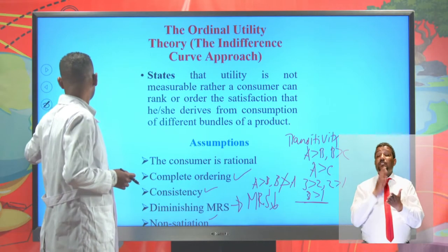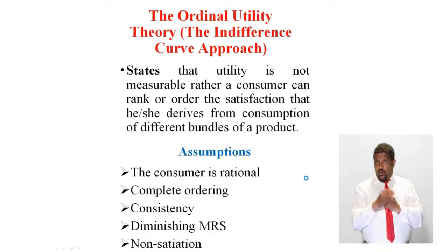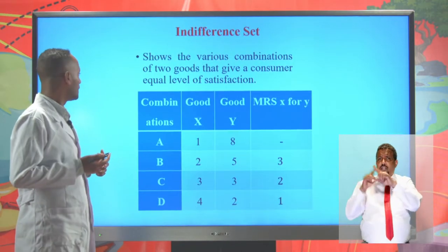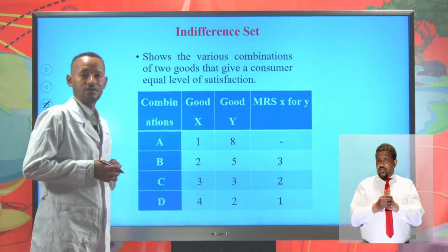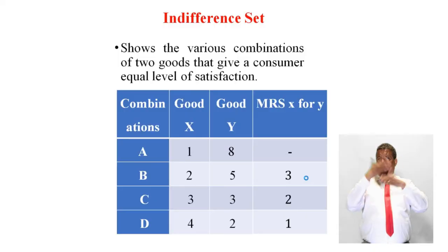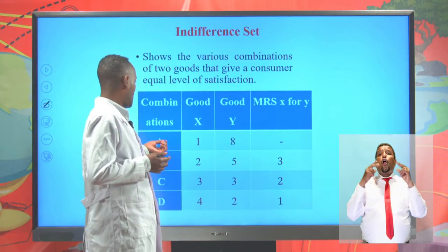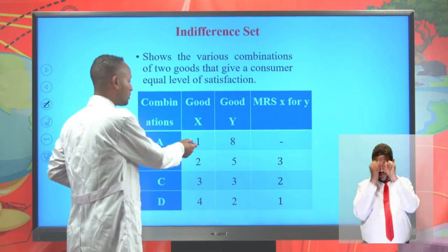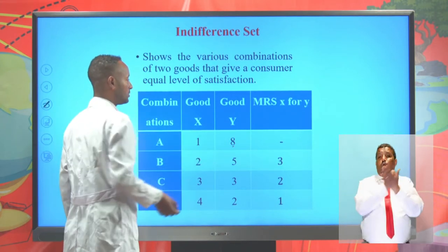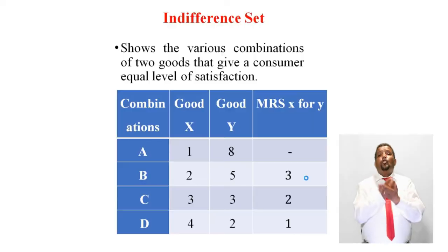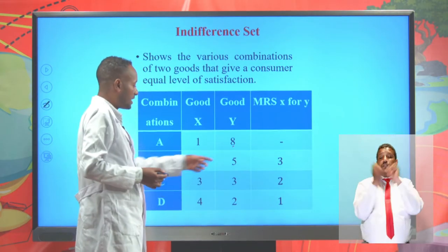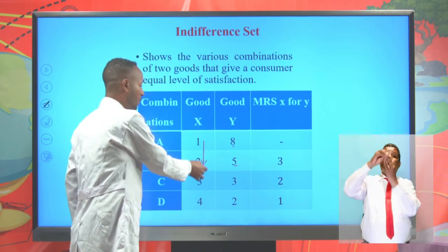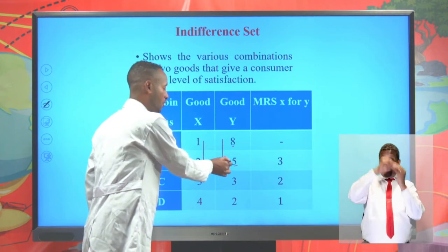The indifference set shows the various combinations of two commodities that give a consumer equal level of satisfaction. Suppose a consumer consumes two goods X and Y. At combination A, the satisfaction that a consumer derives from one unit of commodity X and eight units of commodity Y is always equal to the satisfaction from two units of X and five units of Y, because as we increase consumption of X, we decline consumption of Y.